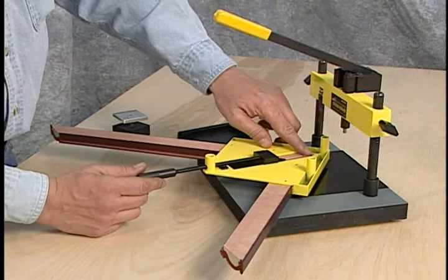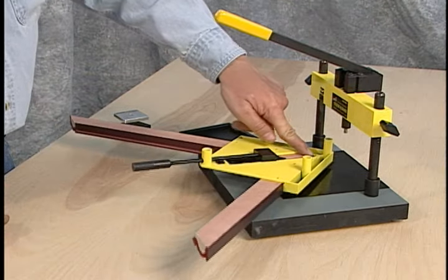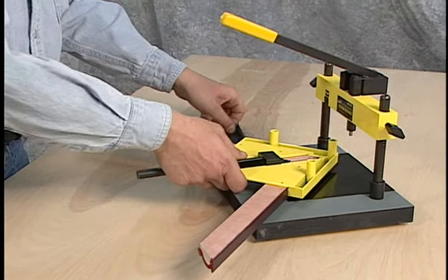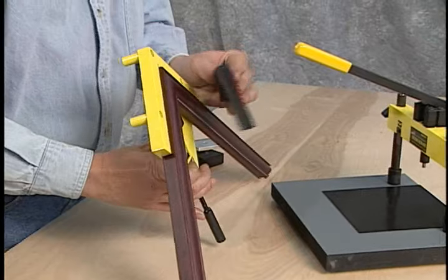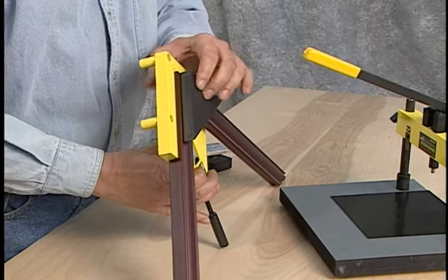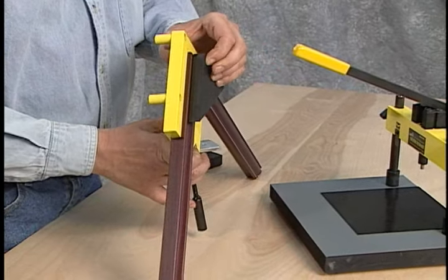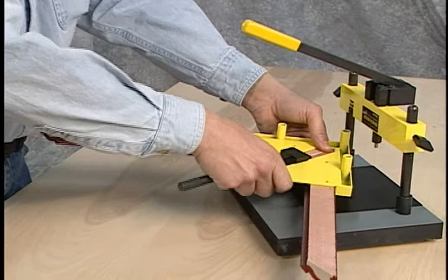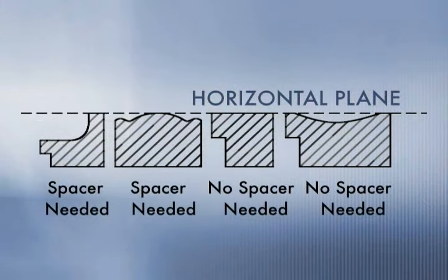If the shape of the molding prevents the molding vise from sitting flat, it may be necessary to use the molding support tool. The support piece forces the vise to sit flat and allow for better driving of the v-nails. Here's an example of molding types that might need the molding support tool.